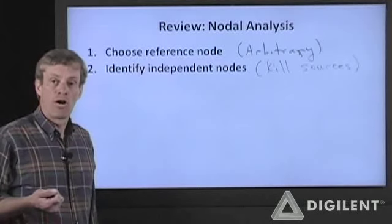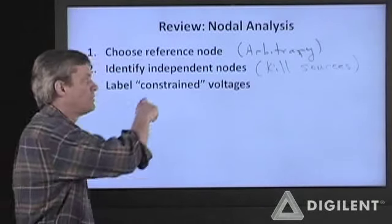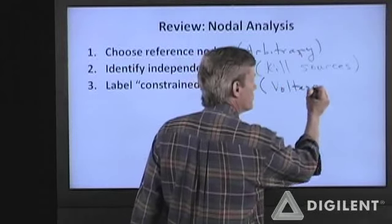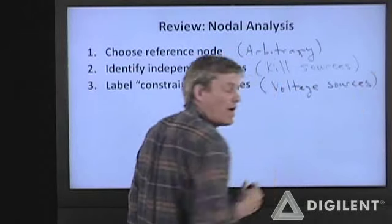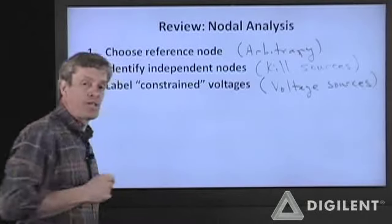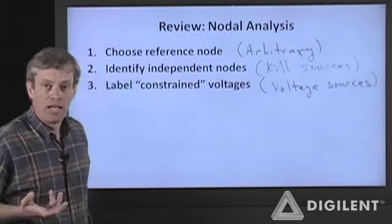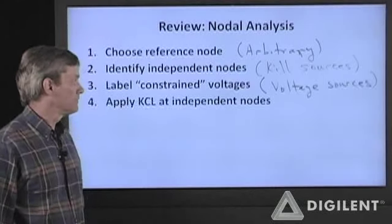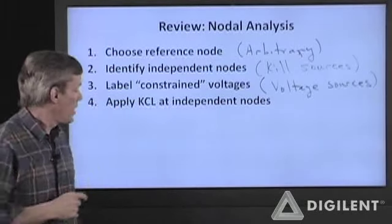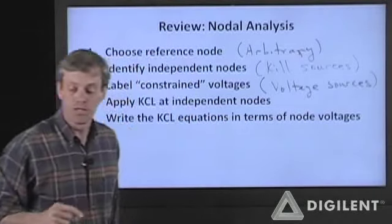The voltages at those nodes are our node voltages. We put our sources back in and labeled constrained voltages. Constrained voltages are induced by voltage sources. A voltage source in a circuit sets the voltage difference between the nodes at both ends of that voltage source. That introduces a constraint, providing some additional equations that went away when we eliminated our dependent nodes. We applied KCL at our independent nodes, and then used Ohm's law to write those equations in terms of the node voltages.